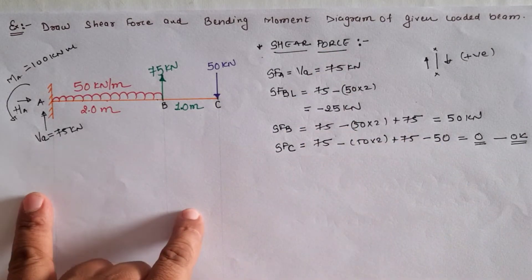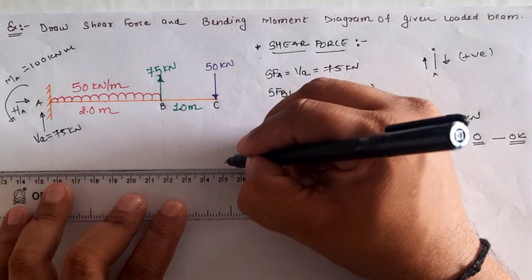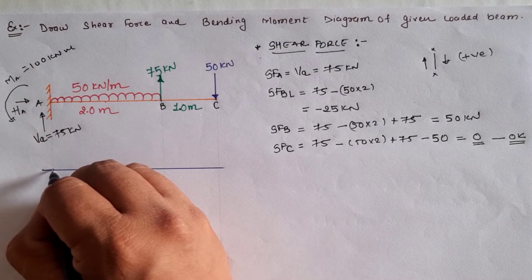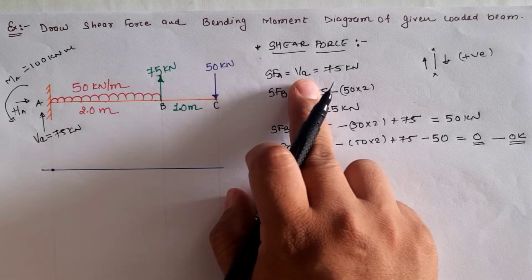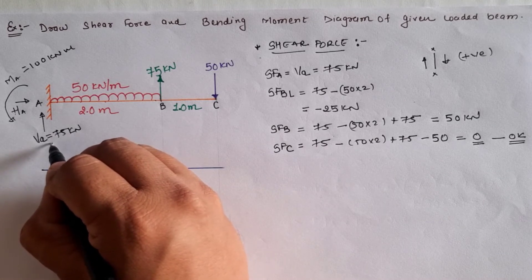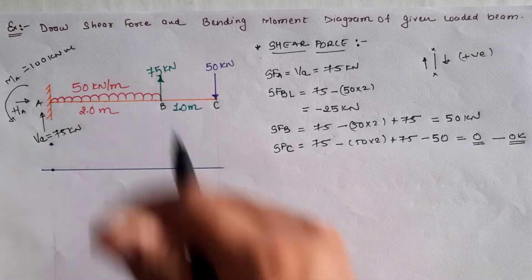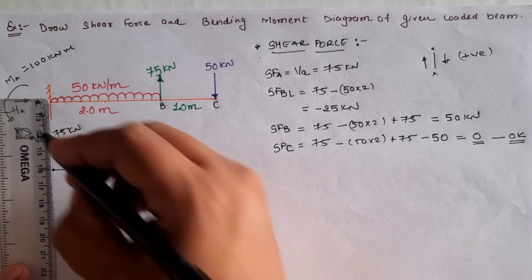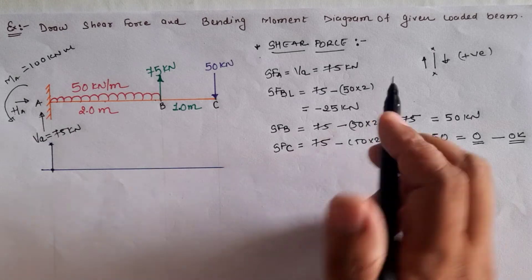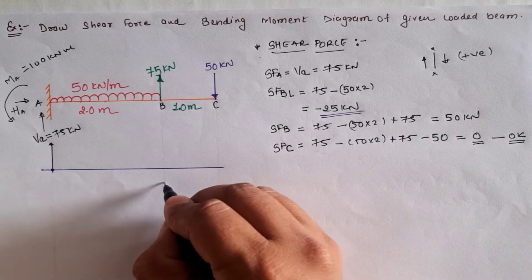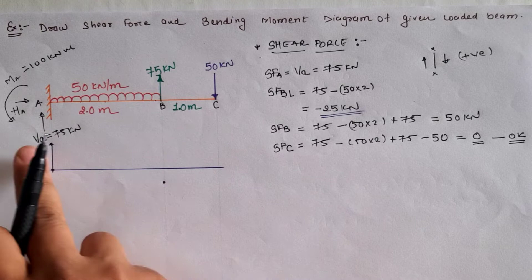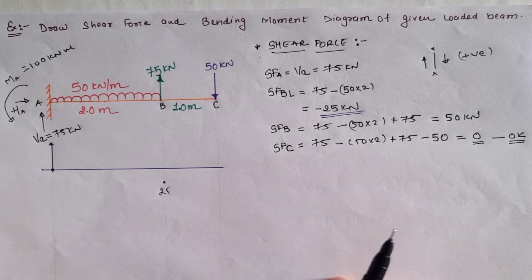To construct the shear force diagram, we take the reference X-X axis. At point A before the reaction the value is 0; with the vertical reaction VA the value jumps to 75 kilonewton, so we draw a vertical line upward. From A to just before B, the value goes from 75 to minus 25. Because there is a UDL, the shear force diagram is an inclined straight line between these values.